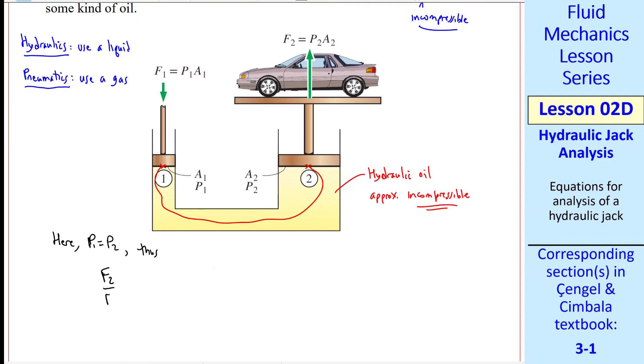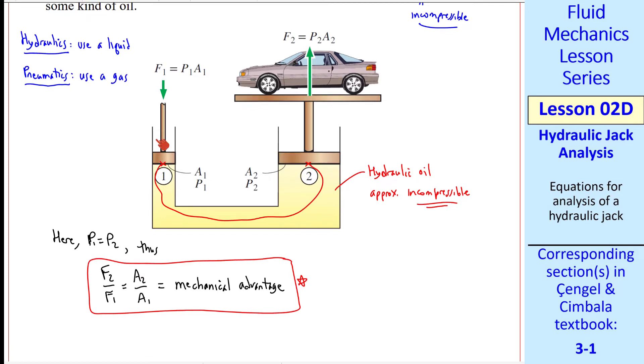And so F2 over F1 is equal to A2 over A1, and we call this the mechanical advantage. If A2 is sufficiently larger than A1, you can actually lift up a car with your pinky finger because of this mechanical advantage. But you'd have to push down a very large distance in order to get this car to move up a little bit. That's why we typically have a pump in here where you're constantly going up and down, pumping that liquid in, and moving the piston up.